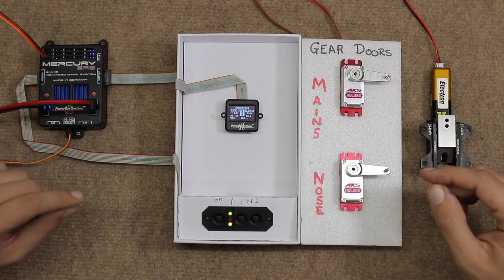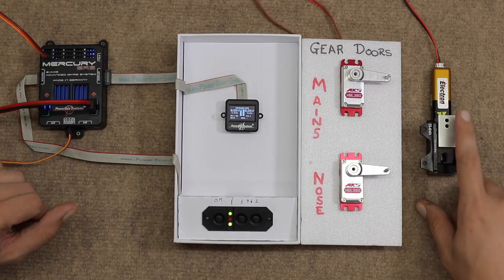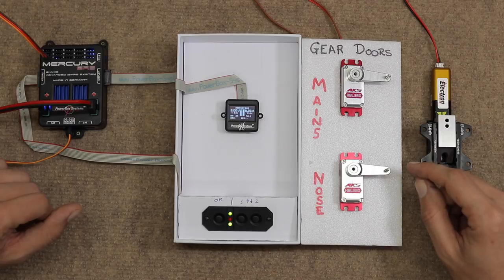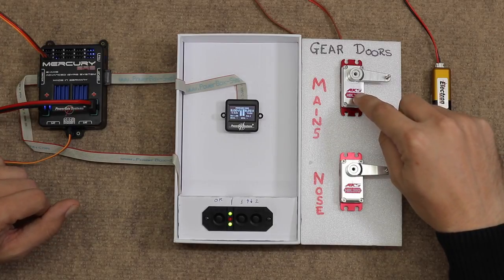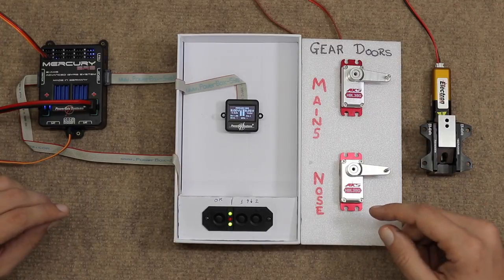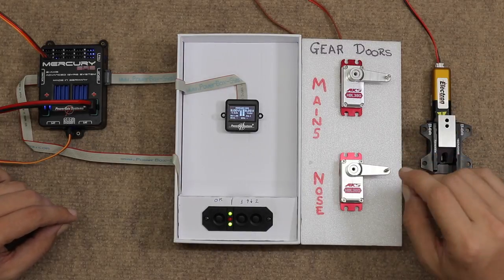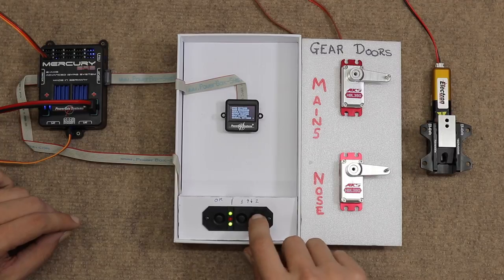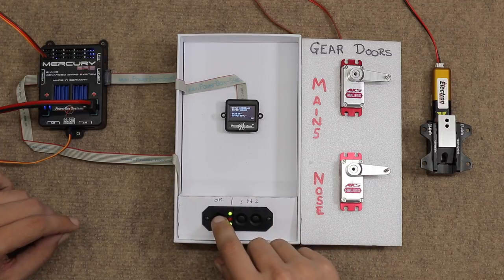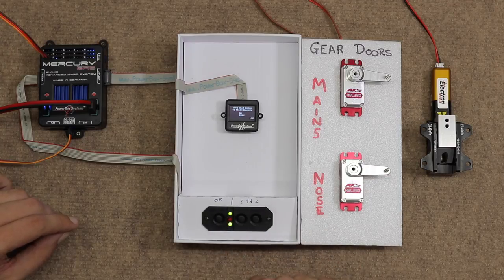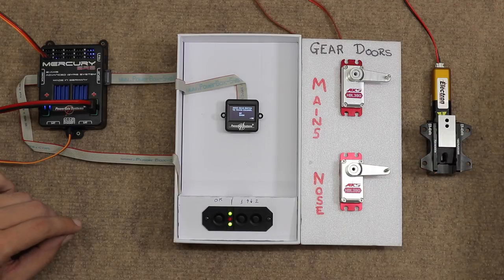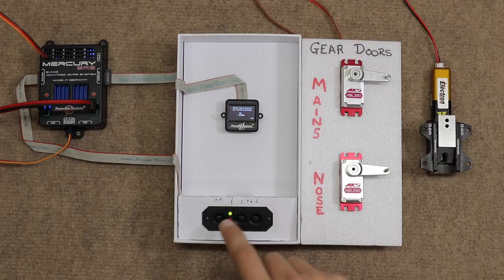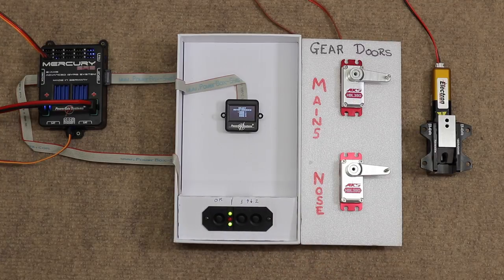Okay guys, so here we have our setup for today. We have our retracts, specifically going to be using electron retracts for the example. And 2 servos, which are going to act as our gear doors. We have our main gear doors, so the ones on the wing. And our nose gear door, obviously for the front of the plane, the nose wheel. So we need to go into the mercury. Find door sequencer. And we're going to go straight into our setup assistant. First step, move gear switch to teach channel. So we're going to flip our transmitter. And you can see that it's already detected which channel that is. So go to OK. Select motion sequence.